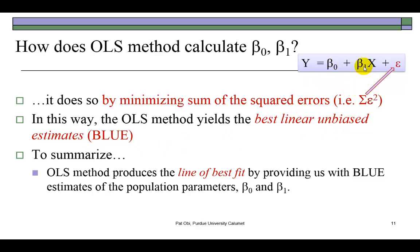In the end, what we're going to wind up having would be the best linear unbiased estimate for β₀ and β₁. When that happens, we call the regression line that would have been obtained in the process the line of best fit.